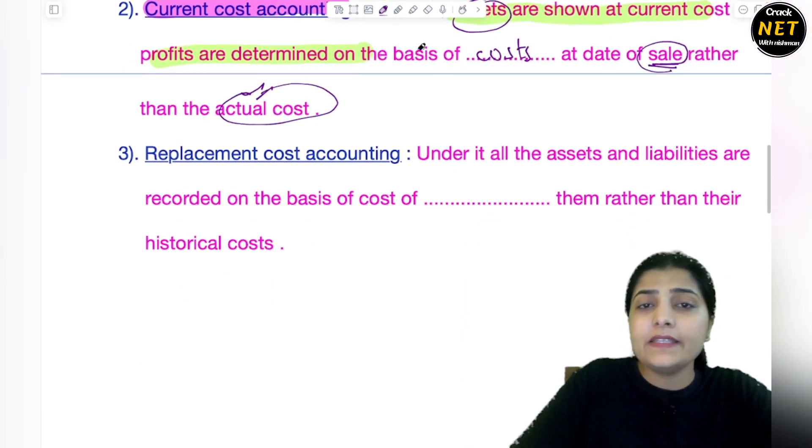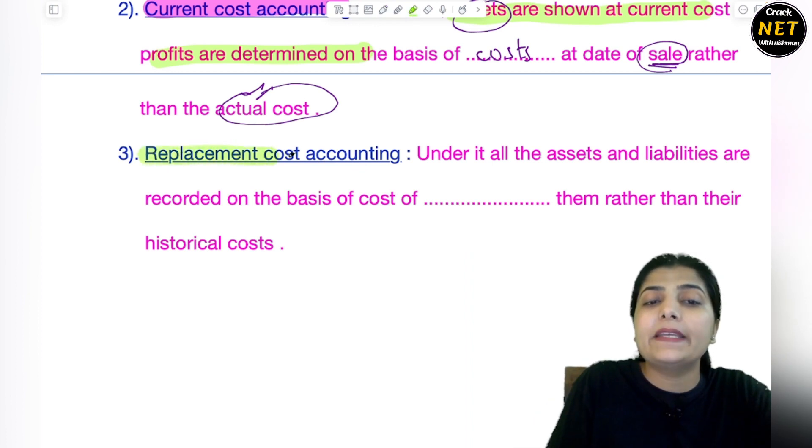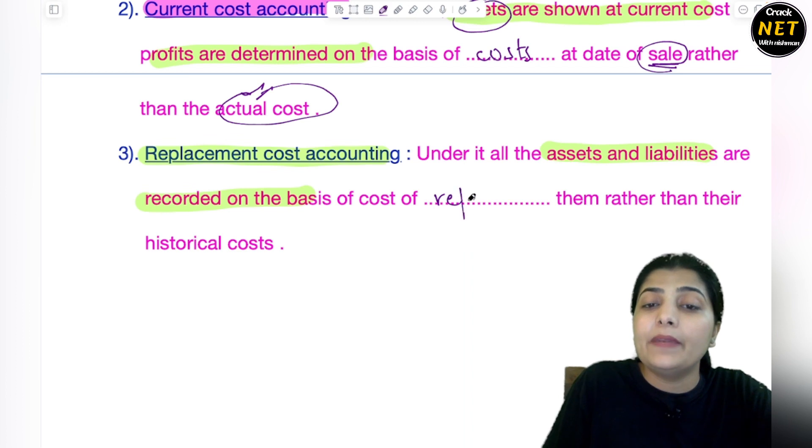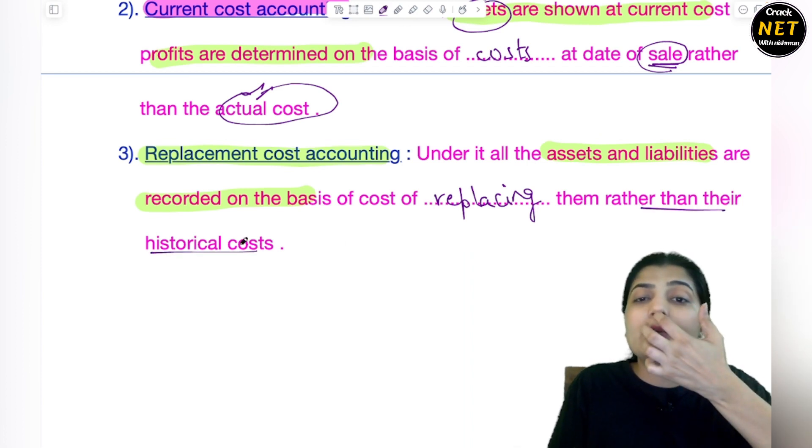The third method is again very important - that is Replacement Cost Accounting. What does Replacement Cost Accounting say? Here also, just like I said - here the assets and liabilities are recorded on the basis of the cost of replacing them. If they were to be replaced, how much would it cost? Rather than their historical cost, you measure and take their replacing cost.